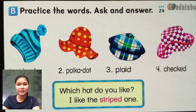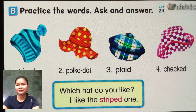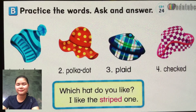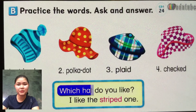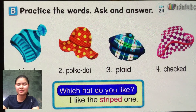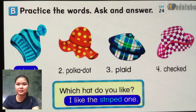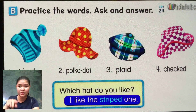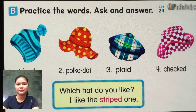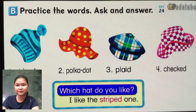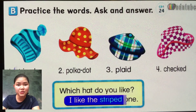Okay, now next we'll do ask and answer. Come down. Here we'll start with number one. Which hat do you like? Look at number one: I like the striped one. Okay, so number one is striped. Okay, we'll start again. Number one: Which hat do you like? I like the striped one. Number two: Polkadot. Which hat do you like? I like the polkadot one.